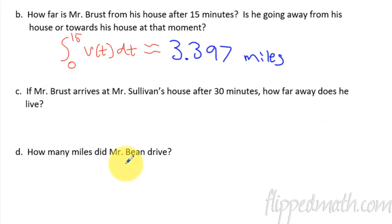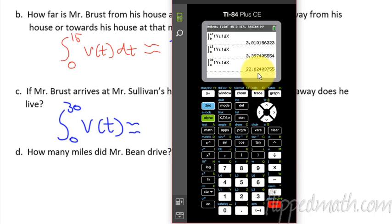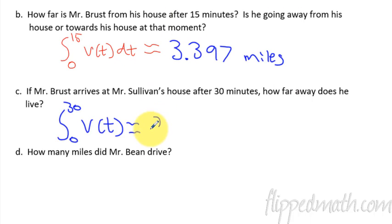Alright, if Mr. Brust arrives at Sullivan's house after 30 minutes, how far away does he live? So how far apart are they from each other? So that is just a simple 0 to 30 of V of T. So what is the distance, the displacement between their houses if it takes 30 minutes to get there? Let's do the same thing again. Second entry, and let's change that 15 to a 30, and hit enter. 22.824. That is how far apart they live, because we're just taking the displacement from 0 to 30 minutes.